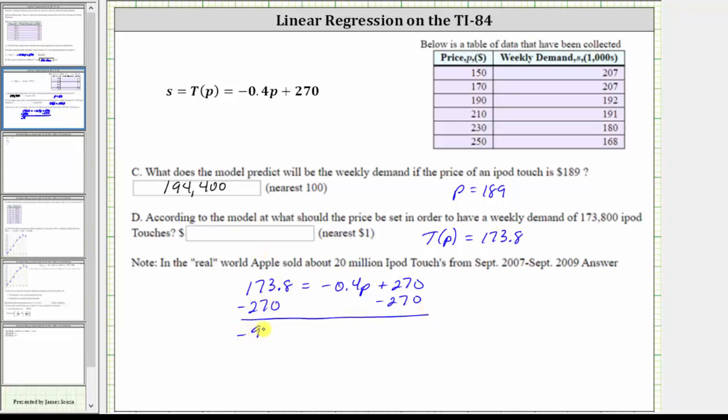This difference is negative 96.2, and this is equal to, on the right, this is zero, so we have negative 0.4 P. Divide both sides by negative 0.4.